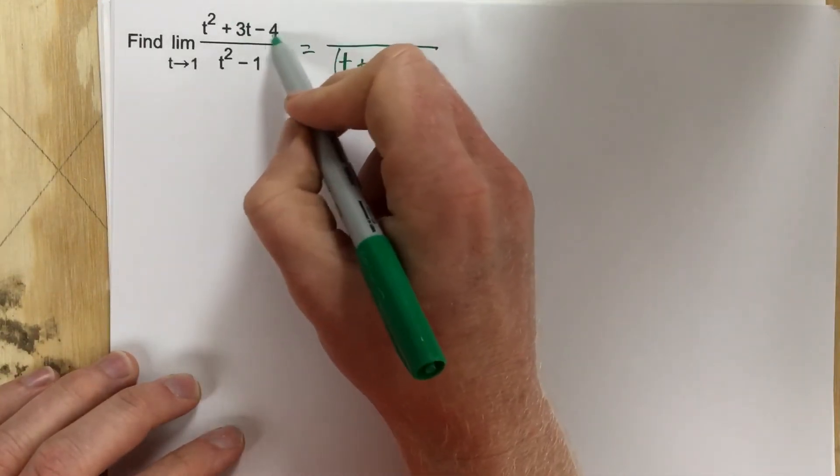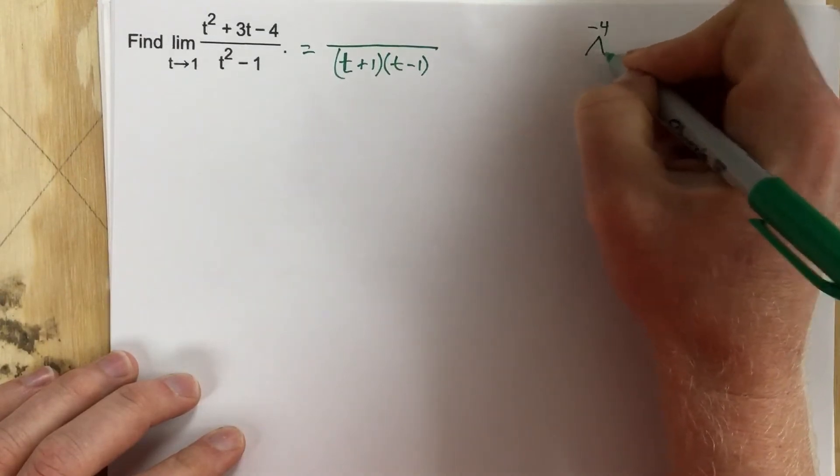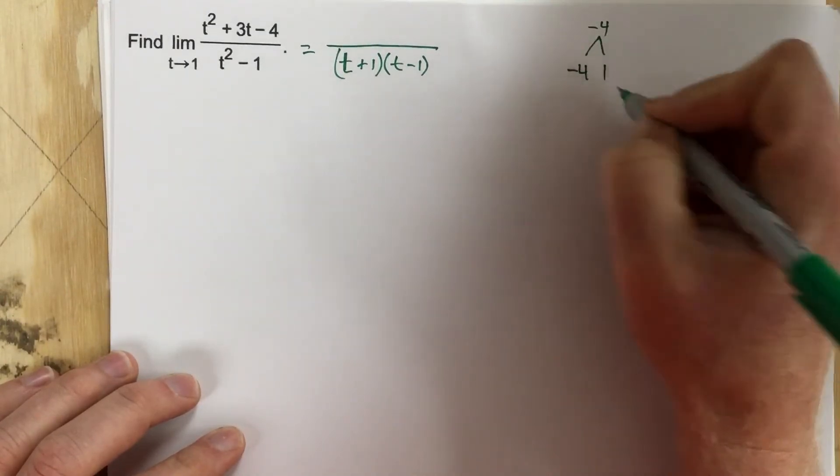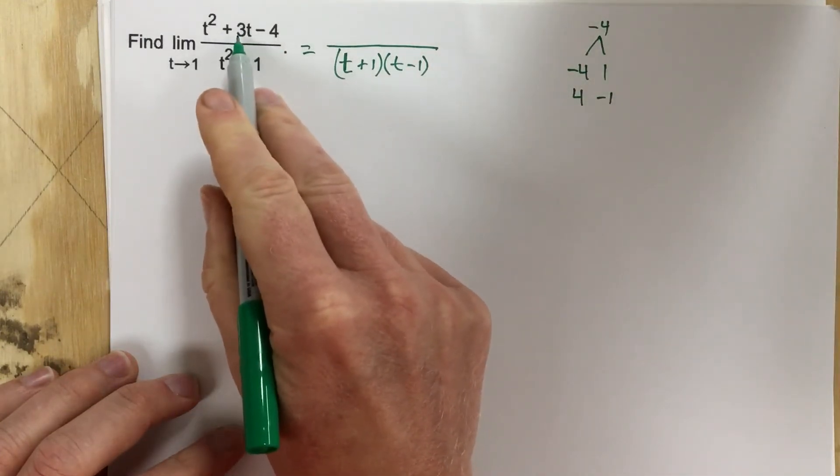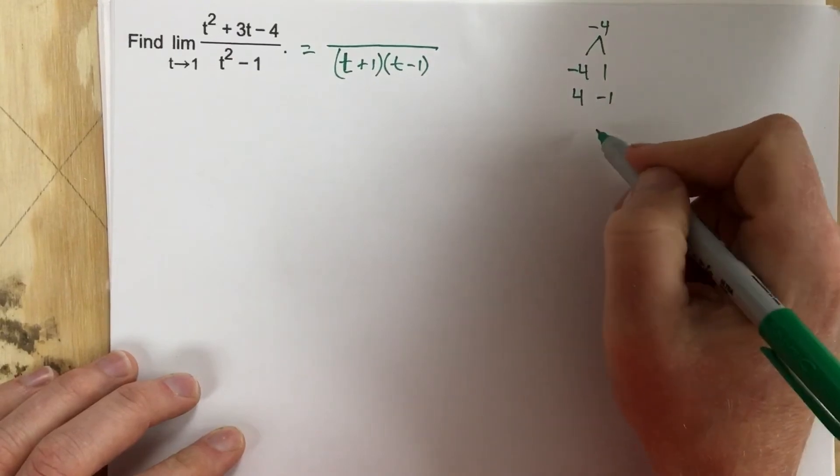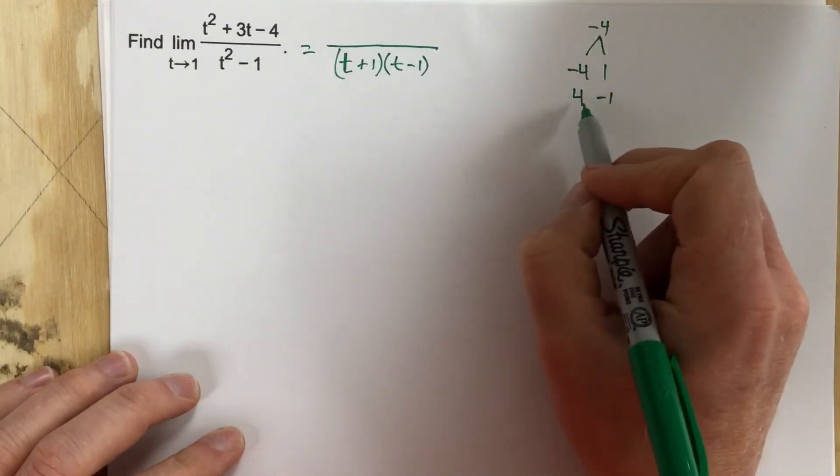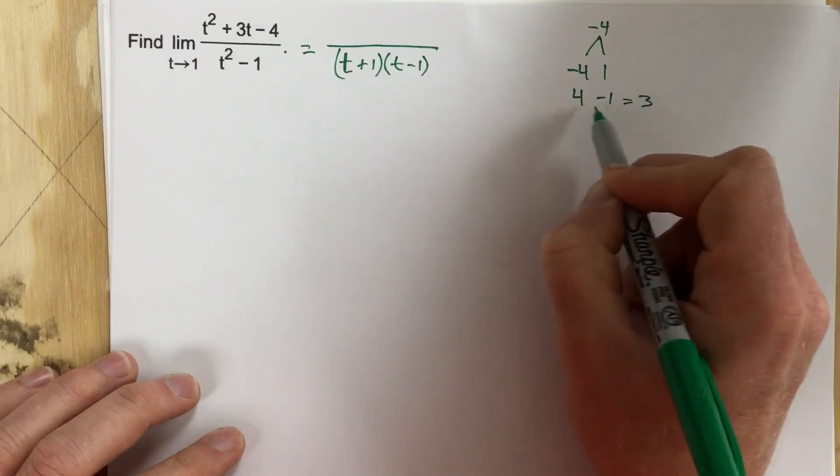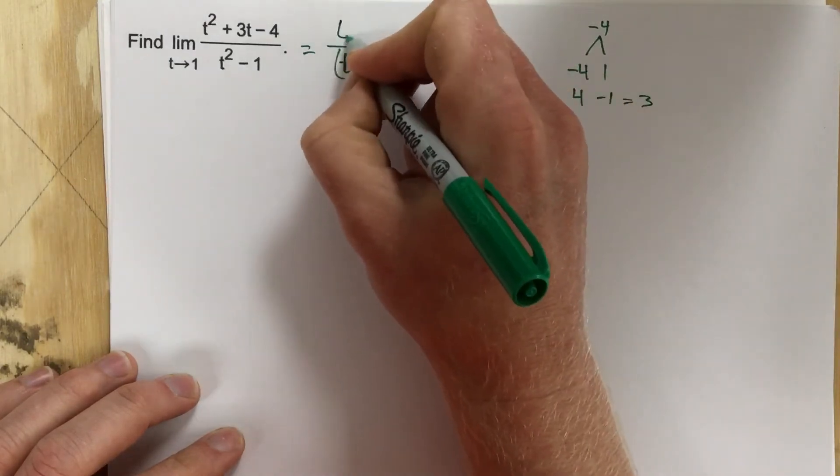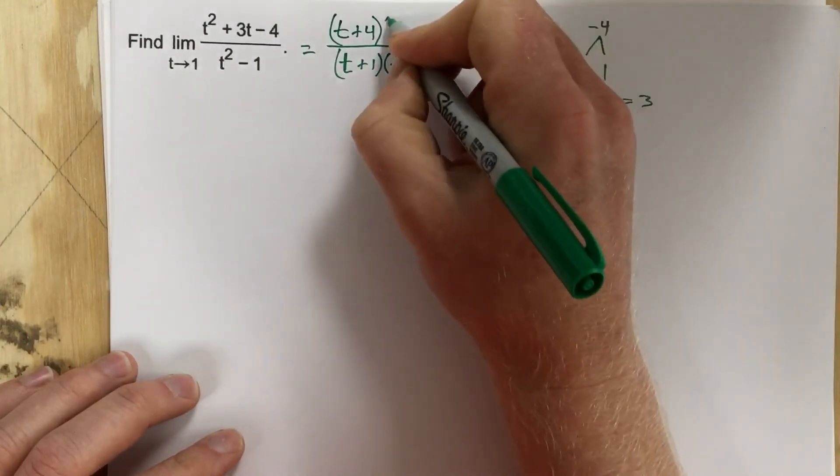For the top, what are the factors of negative 4? Well, the factors of negative 4 are negative 4 and 1, or 4 and negative 1. I need a positive 3 there. I didn't use 2 and 2 because I'm trying to get a 3. So I'm going to use the 4 and the negative 1 because that adds to 3. So I need t plus 4 and then t minus 1 here.